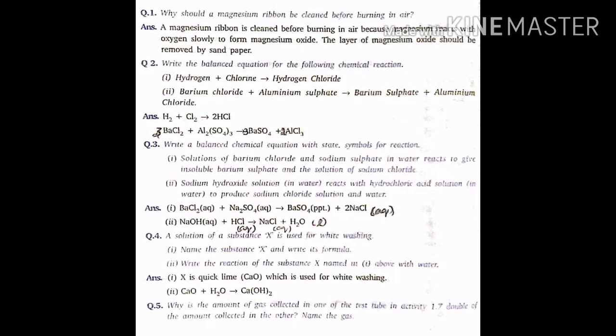Second one. Barium chloride formula BaCl2, aluminium sulfate formula Al2(SO4)3 gives barium sulfate BaSO4, aluminium chloride AlCl3. Now, try to balance the equation. While balancing, the equation will be 3 BaCl2 plus Al2(SO4)3 gives 3 BaSO4 plus 2 AlCl3. Check. The equation is now balanced.